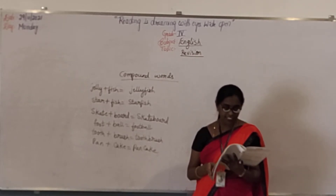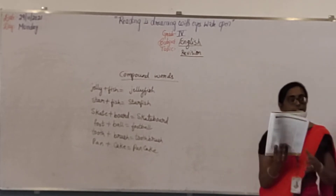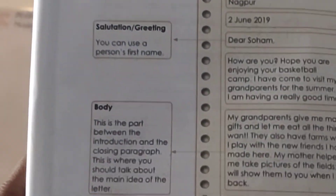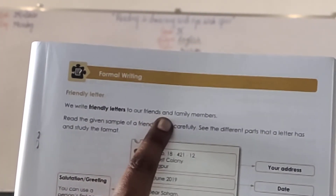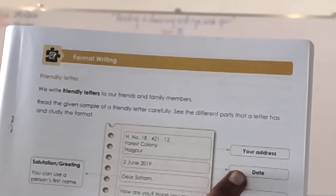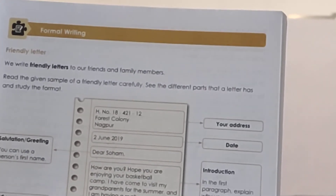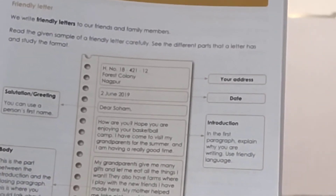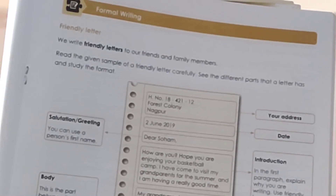Then what else did we learn, children, in this class? We learned formal writing also, right? I will show you how to write a formal writing. See, like a friendly letter — please listen. We write letters to our friends and family members in this format. First we need to write our address, then we will write the date, then we will write greetings, then the introduction. Then we will write the main body part — which is the main thing why we are writing this letter. Then at the last we will close the paragraph.